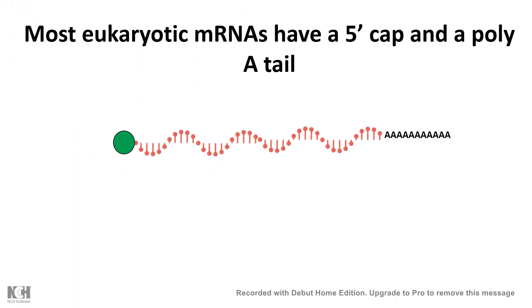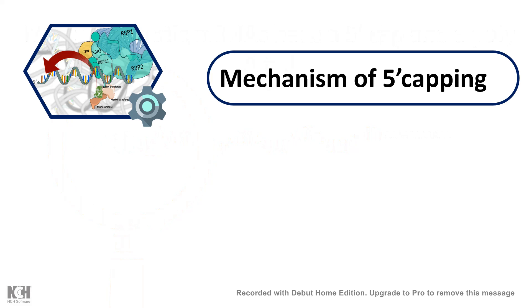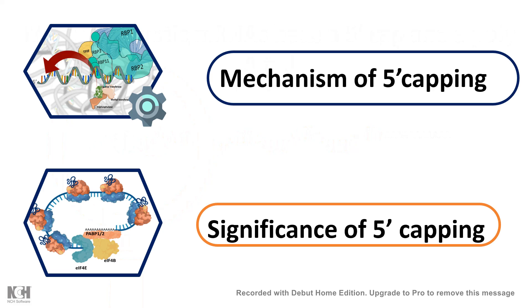In this video, we'll talk about the capping process at the 5' end of the eukaryotic mRNA. The first part of the video will focus on the mechanism of the 5' capping, and at the end of this video we'll focus on the significance of the 5' capping and its physiological importance.